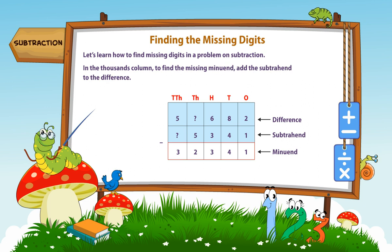In the thousands column, to find the missing minuend, add the subtrahend to the difference. 5 plus 2 is equal to 7.